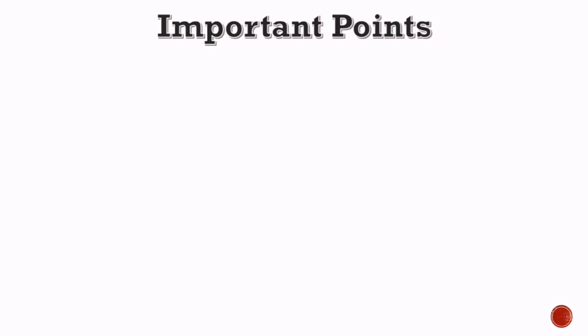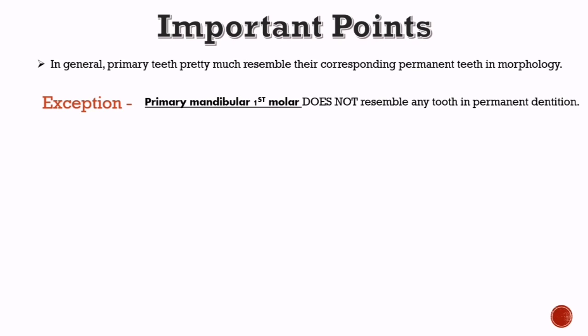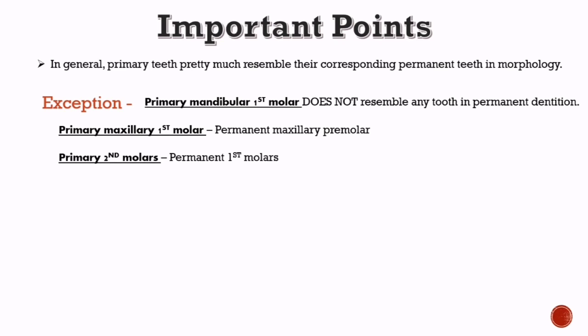Now let's have a look at some important points. In general, primary teeth pretty much resemble their corresponding permanent teeth in morphology. One major exception is that the primary mandibular first molar does not resemble any tooth in the permanent dentition. In addition, the primary maxillary first molar resembles a permanent maxillary premolar rather than a permanent molar in crown anatomy; however, it has three roots, a trait which is common to all maxillary molars. The primary second molars closely resemble the permanent first molars in both arches and appear as their replicas, though smaller in size.